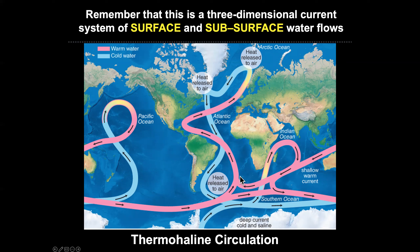The thermohaline circulation diagram shows surface currents — depicted in red or pink — traveling as surface flows, then getting colder and saltier, sinking, traveling underneath before rising up again to become surface currents. This very complicated but very predictable set of flows drives climate and weather patterns across the earth. It is a three-dimensional current system of both surface and sub-surface flows of water.